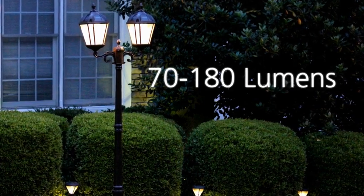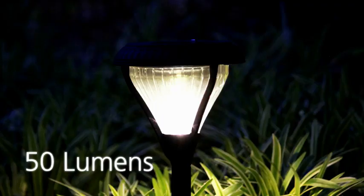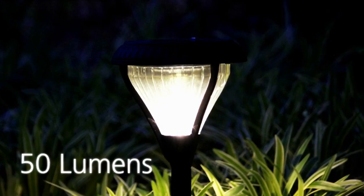Our residential fixtures range from 70 to 180 lumens of brightness, while for a garden path, 50 lumens is often enough.